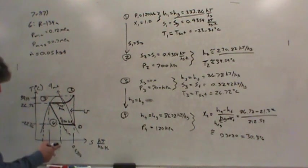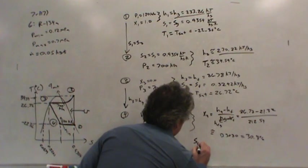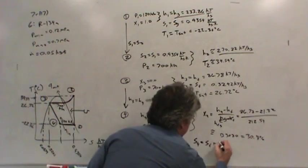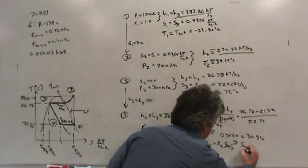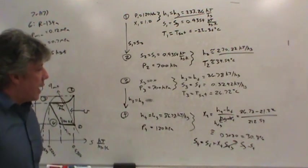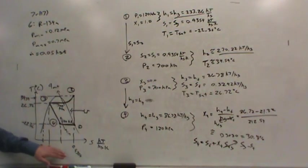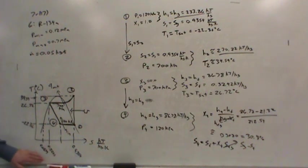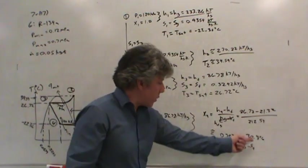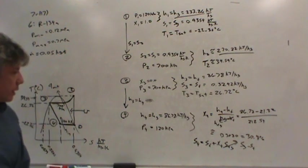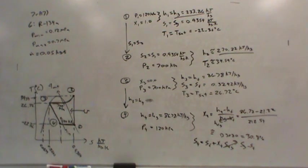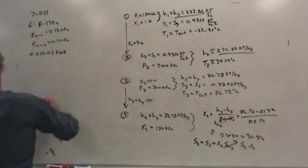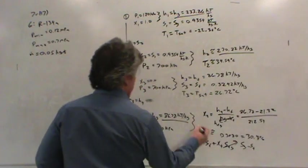We can also come up with the entropy at state four. S4 equals Sf plus X4 times Sfg, where Sfg is Sg minus Sf. Sg is 0.9354, Sf is 0.0879, and X4 is 30.8%. You should be able to calculate the entropy in state four and finish off that diagram. We've completed the TS diagram and successfully found all of the enthalpies in all of the states.